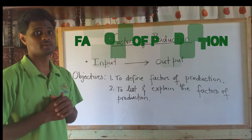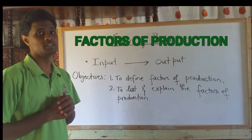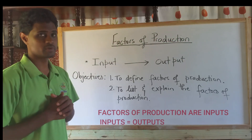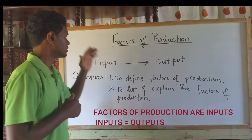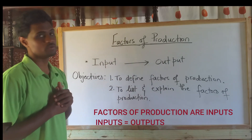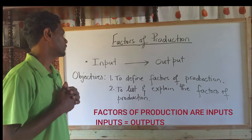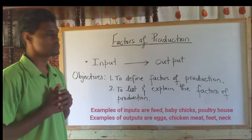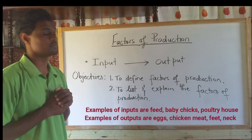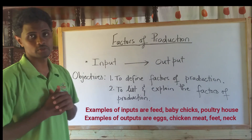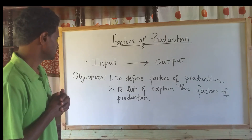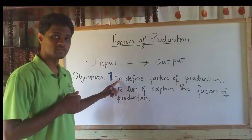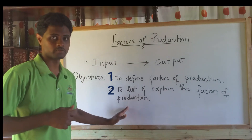Agriculture is a business, and in order to produce goods and services we need inputs. Those inputs are what we term as factors of production. The factors of production would be your input, and those inputs are what you put together or use up to get our output. For example, going into poultry production, the inputs would be the chicken, the poultry house, feed, and equipment, and the output would be eggs or meat. Today's lesson objectives: one, to define factors of production; and two, to list and explain factors of production.